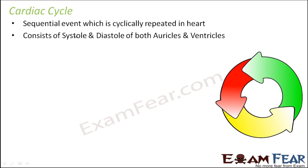The cardiac cycle consists of systole and diastole of both auricles and ventricles. All four chambers contract at certain times and then relax, depending upon the impulse generated by the SA node and the AV node. The first step of the cardiac cycle is joint diastole, where both the auricles and the ventricles are all in a relaxed state.